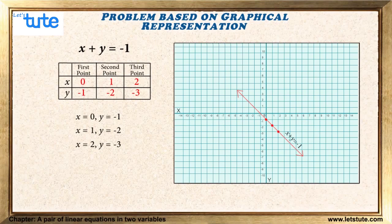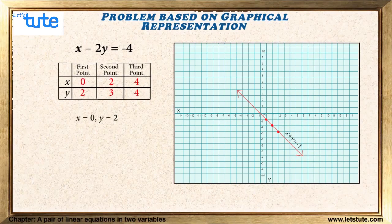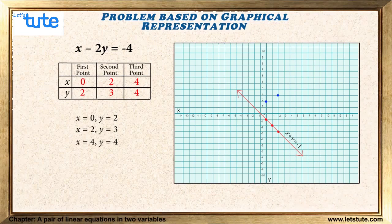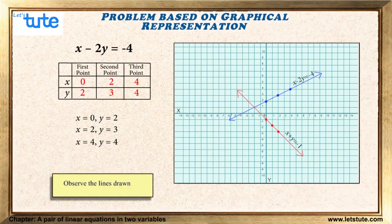Now for the equation x minus 2y equals minus 4: when x equals 0, y equals 2 — this is one point; when x equals 2, y equals 3 — this is the second point; when x equals 4, y equals 4 — this is the third point. Let us join these three collinear points and draw a straight line representing x minus 2y equals minus 4.